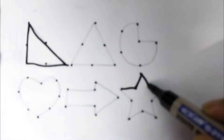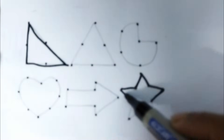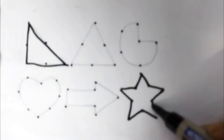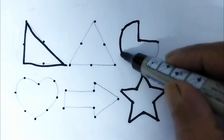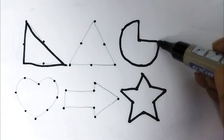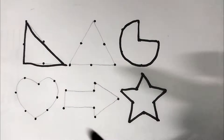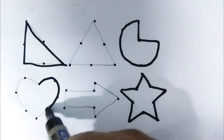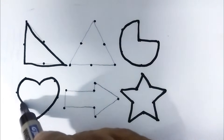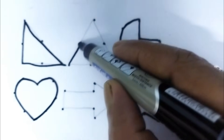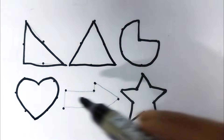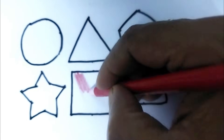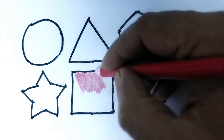This is a star. Pie — this is a pie shape. This is a heart shape. Heart shape. This is a triangle. This is red color. Red color.